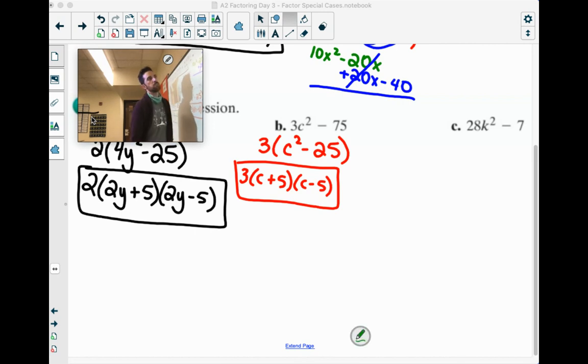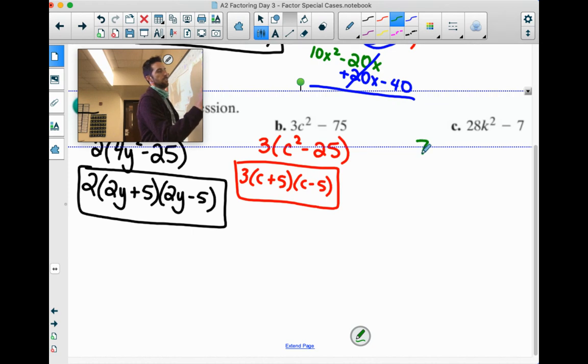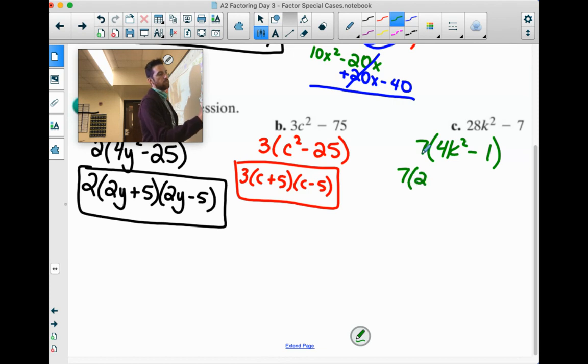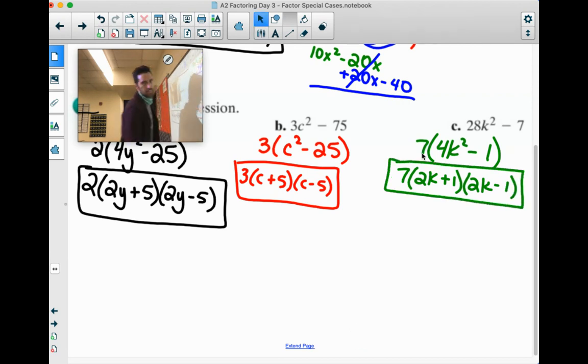Last one. What do they have in common? A 7. 7 times 4k squared is 28k squared. And 7 times 1 is 7. Those are both perfect squares. The square root of 4k squared is 2k. Square root of 1 is 1. So 2k plus 1 and 2k minus 1. Splendid.